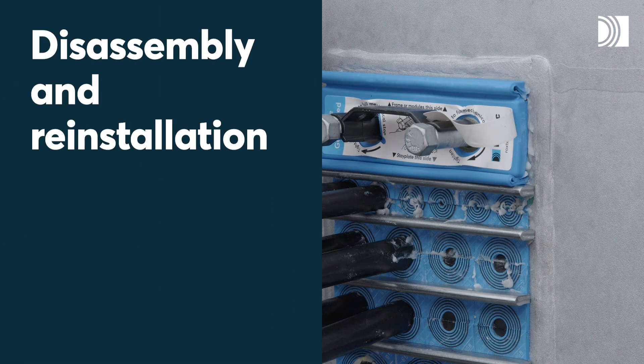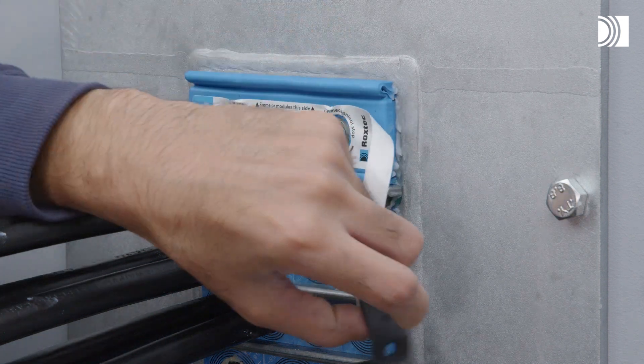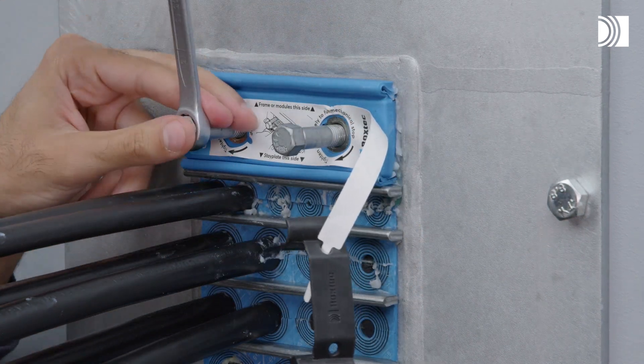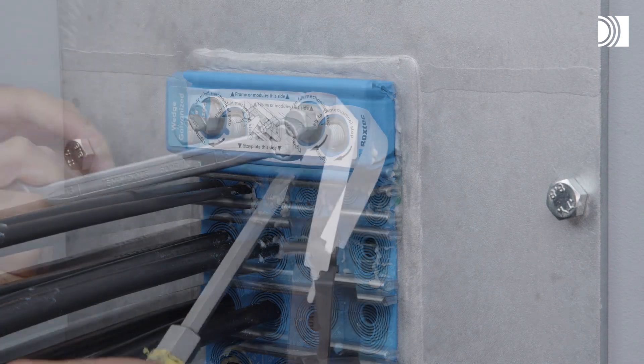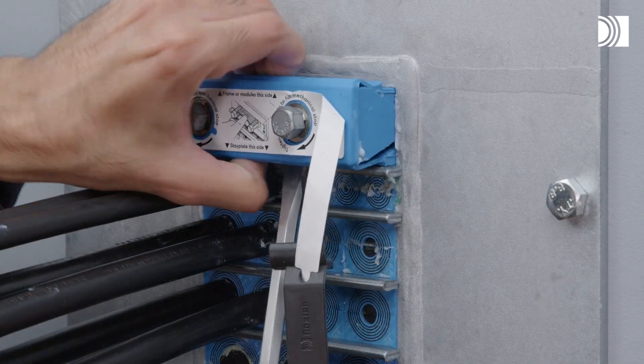Disassembly and reinstallation. Remove the wedge clip from the wedge. Loosen the screws alternately to full stop. Lift the wedge over the stop flange.